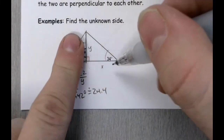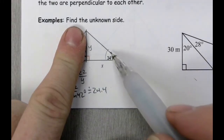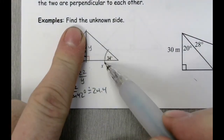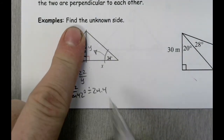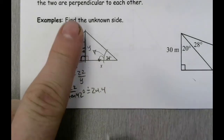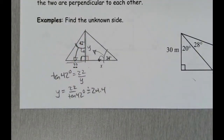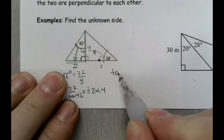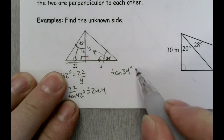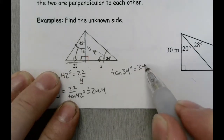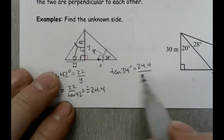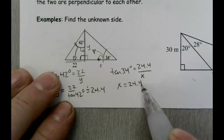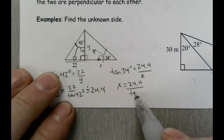Now I look at this triangle and don't worry about the other one. I focus on the reference angle — 34 degrees — which makes the side I just calculated the opposite side, and I'm looking for the adjacent side x. What trig function combines opposite and adjacent? Tangent again. So the tangent of 34 degrees equals y — which is 24.4 — over x. I swap those: x equals 24.4 over the tangent of 34 degrees.